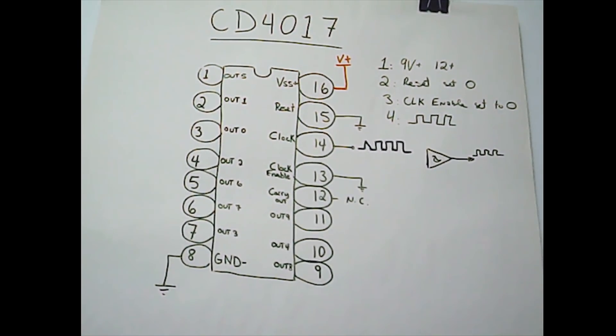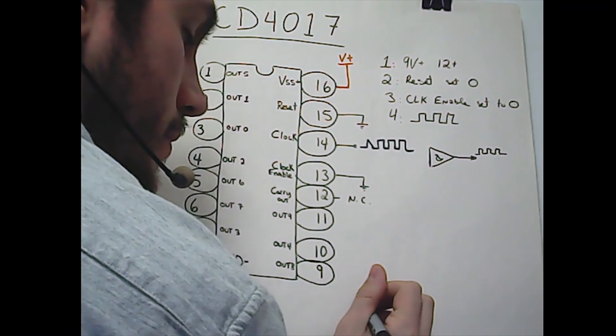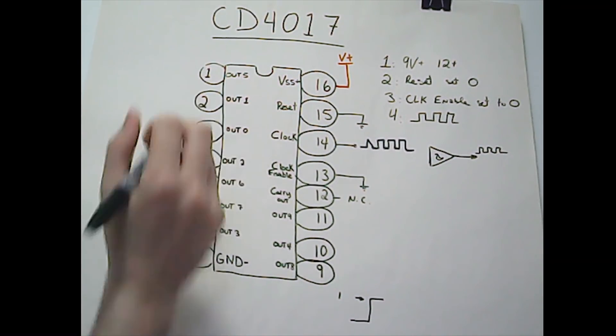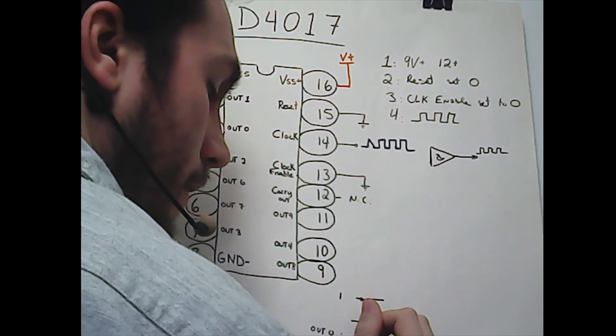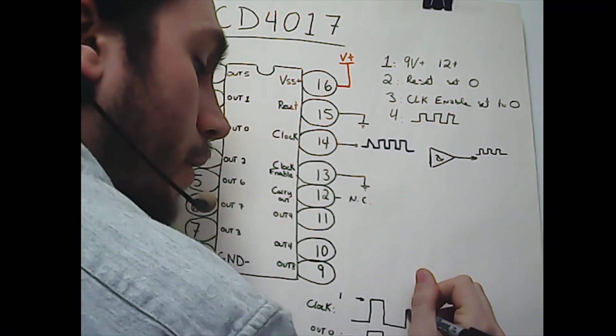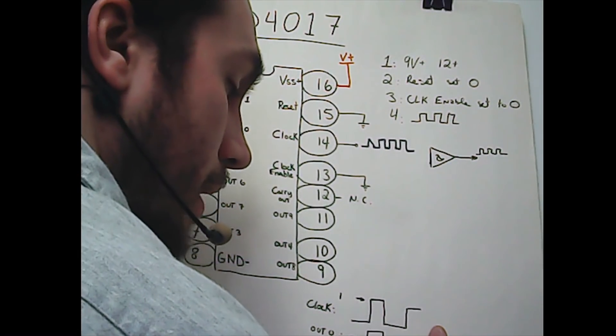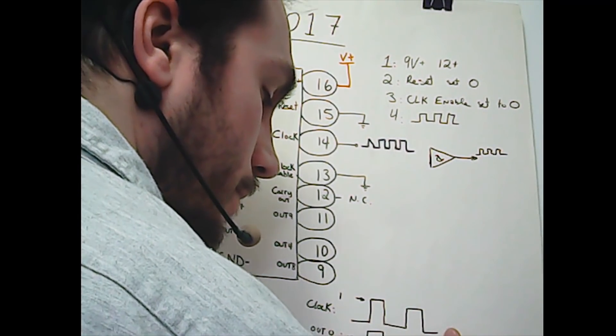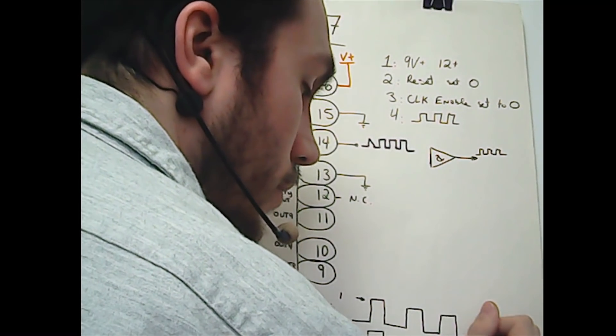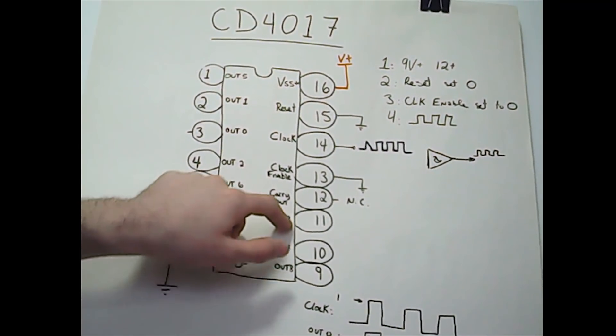Let's make a simulation. The clock will trigger outputs only on a positive edge when the signal is high. On the first clock, output zero goes high while all other outputs are low. On the second clock pulse, output one goes high and all others are low. The third clock triggers output 2, and on and on until it reaches output 9.